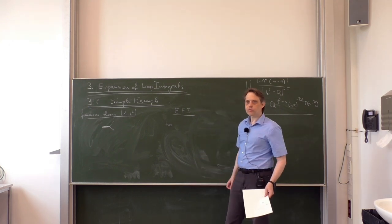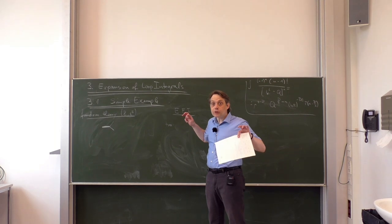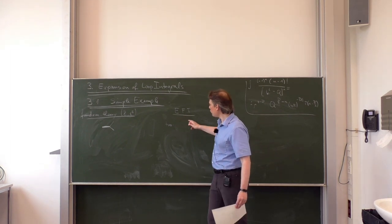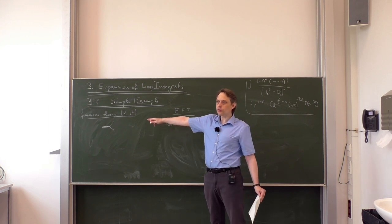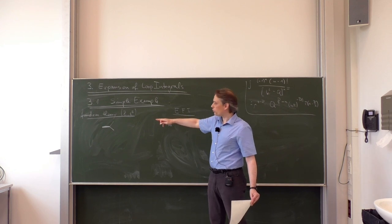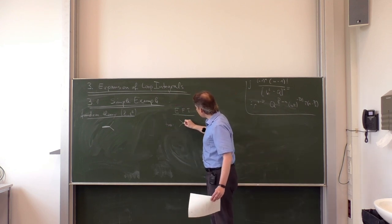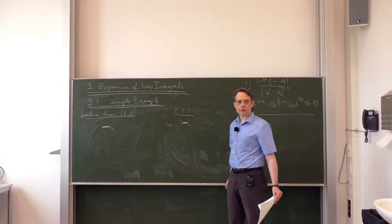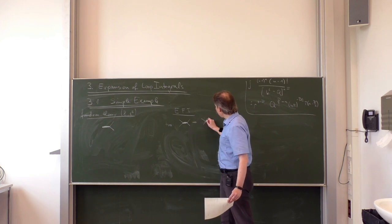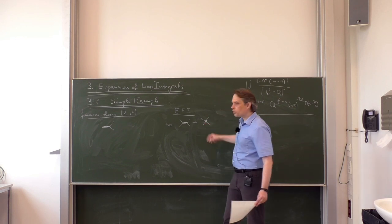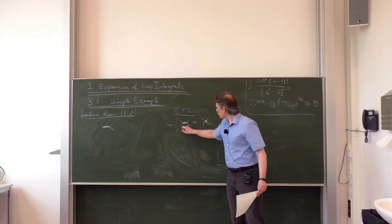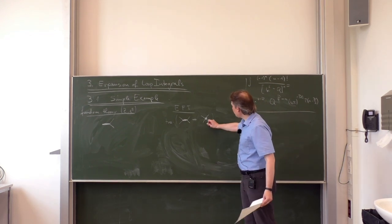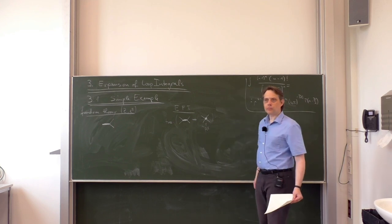At tree level, we perform matching of the EFT to the fundamental theory. The EFT must contain Feynman rules depending only on light particles but reproducing diagrams with a heavy particle in the full theory. In this case, there is only one Feynman diagram of interest at tree level — one with a heavy particle and external light particles — and this becomes in the EFT an effective vertex, which we denote with a thick blob. This vertex is of order 1/M², where M is the heavy mass.